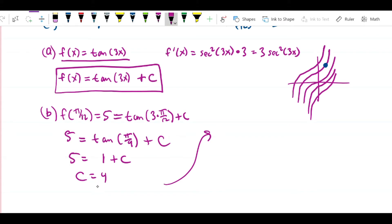That means that the specific function I'm looking for is going to be tan(3x), I've now solved for C, and it's equal to 4. So that's f(x) = tan(3x) + 4.